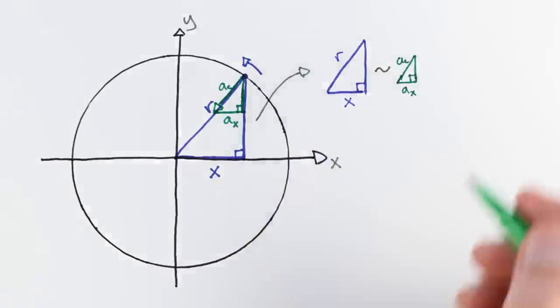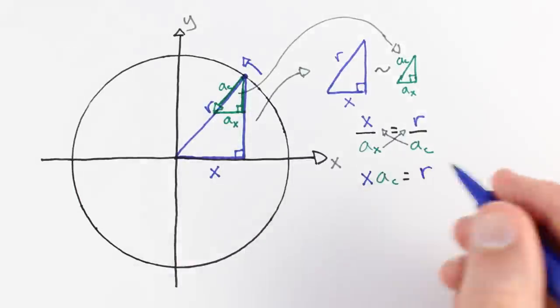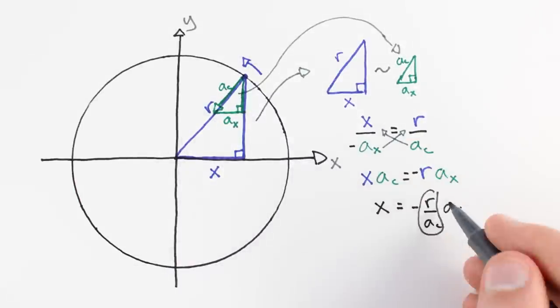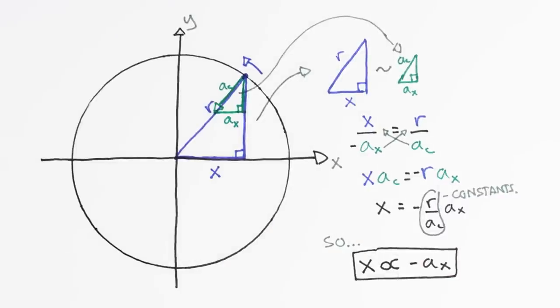Since our triangles are similar, we can see that the base legs x and ax must be proportional. We can express this in a ratio, and if we rearrange our equation, we see that our position x is proportional to some constants times minus acceleration.